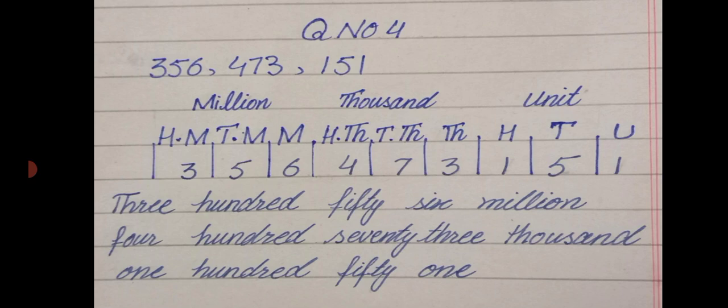You write from the right side and place digits toward the left side. We can write the numbers in each house. Because this is a 9-digit number, it will fall in the tens of millions place.